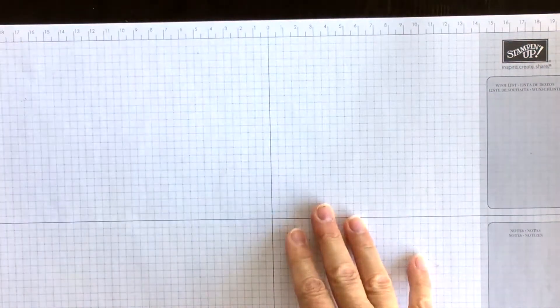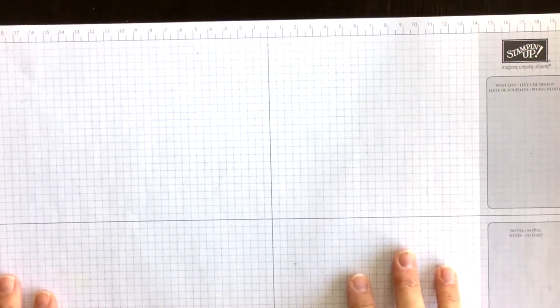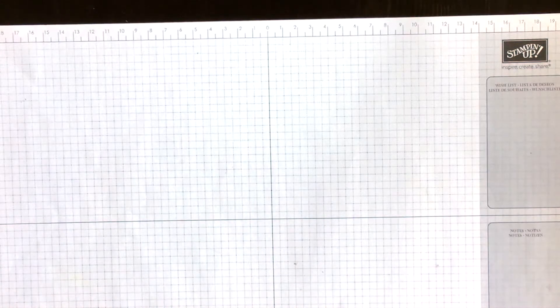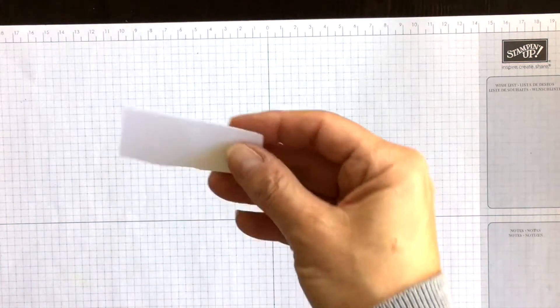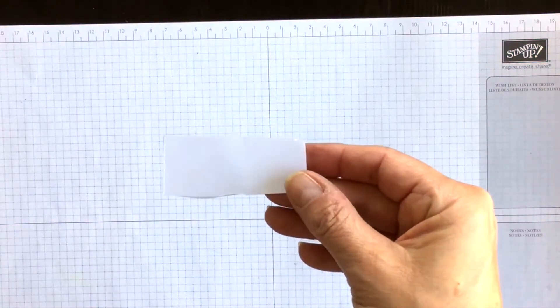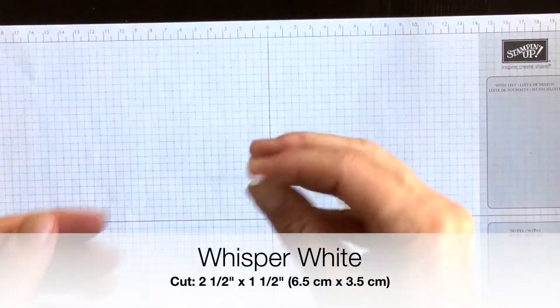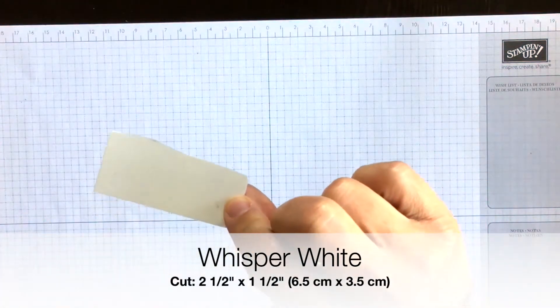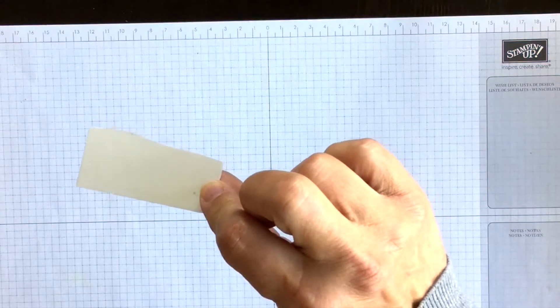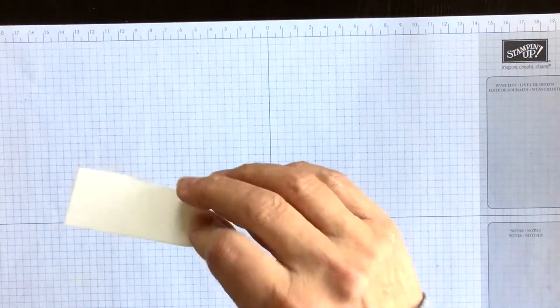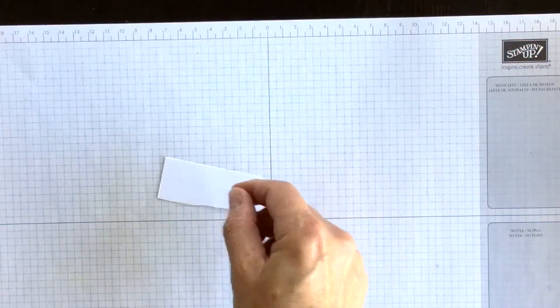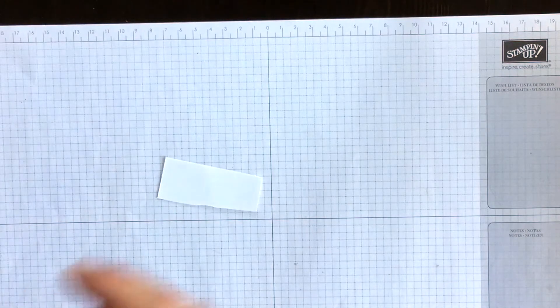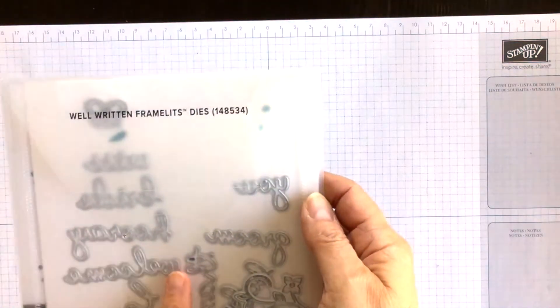Now I'm going to set that aside for a minute and actually start with my Big Shot, which is something I don't normally do. I have a scrap piece of Whisper White and on the back of it I've attached a piece of the multi-purpose adhesive sheet because I want to use one of my well-written framelits dies.